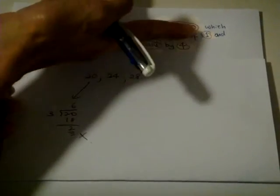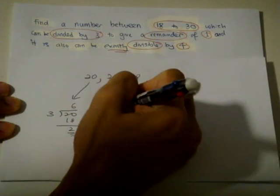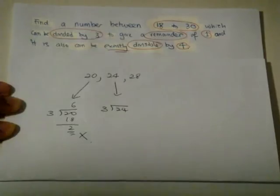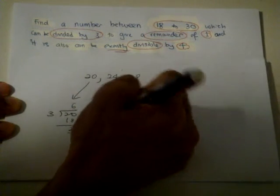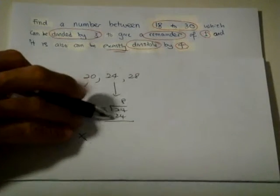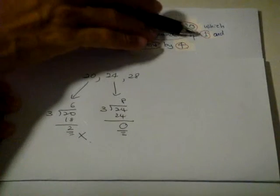Check 24. 24 divided by 3: 8 times 3 is 24, 24 minus 24 is remainder 0. Wrong.